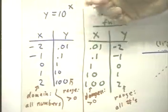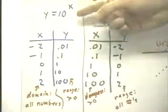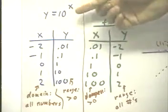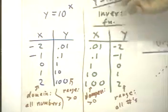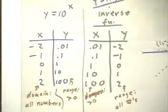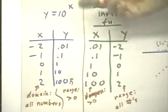It doesn't matter how large the negative number is. If we had negative 100, what's 10 to the negative 100 mean? It means 1 over 10 to the 100th power.